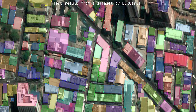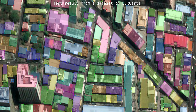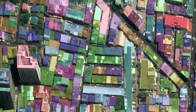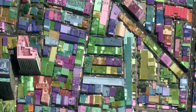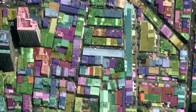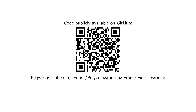We show here our results on a satellite image using an evolved version of our polygonization algorithm, able to separate adjacent buildings that have a common wall. Thank you for listening. Our code is publicly available on GitHub, where you will also find a link to our extended paper.